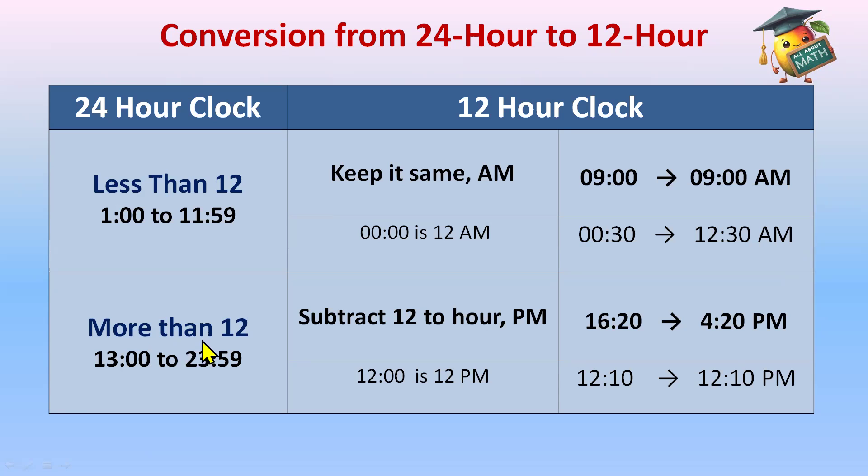And if more than 12, subtract 12 to the hour and write P.M. Like we have 16:20. 16 is more than 12 so subtract 12 from that. 16 minus 12 will be 4 and minutes will be written as it is. And 12:00 in 24 hour clock will be converted into 12 hour clock by writing only P.M. without subtracting or adding anything. So 12:10 will be 12:10 P.M.